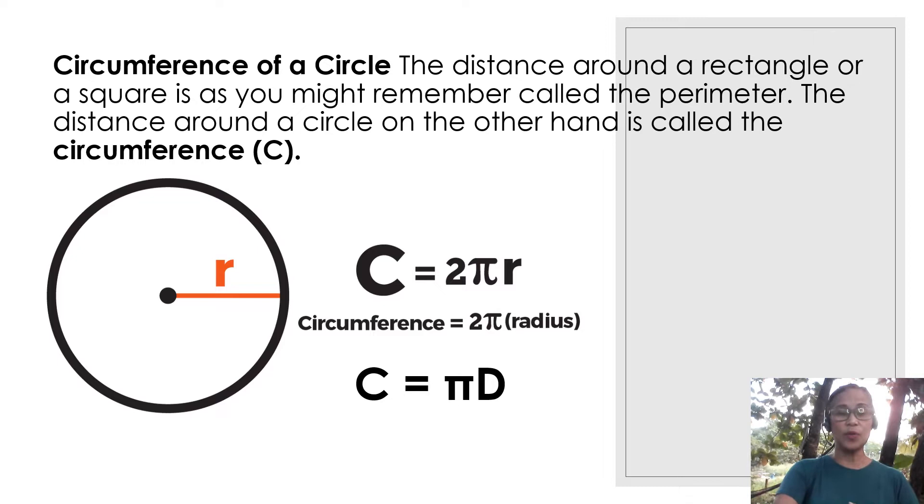Another formula is C equals pi multiplied by the diameter d. Since twice the radius is equal to 1 diameter, that's why this formula is the same as 2 pi r. C equals pi times d.